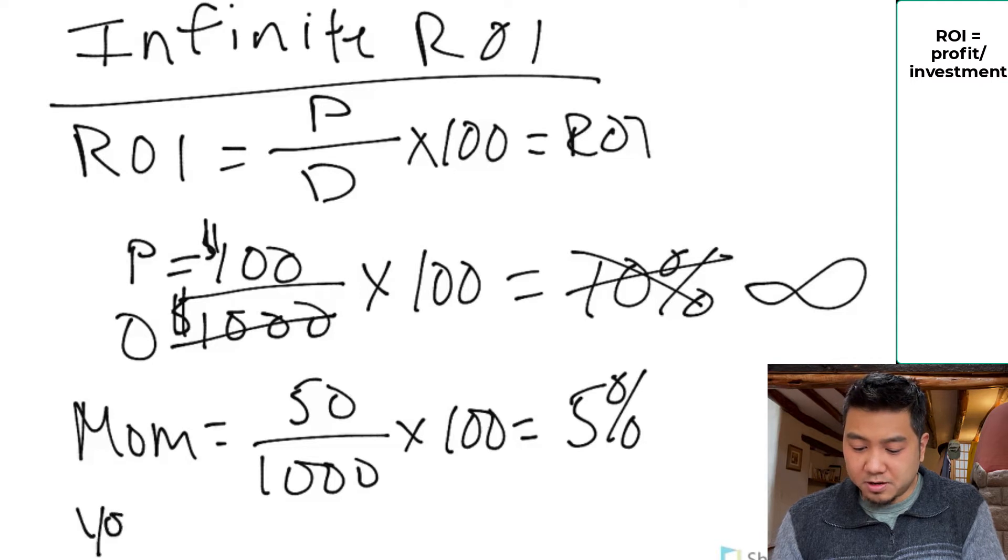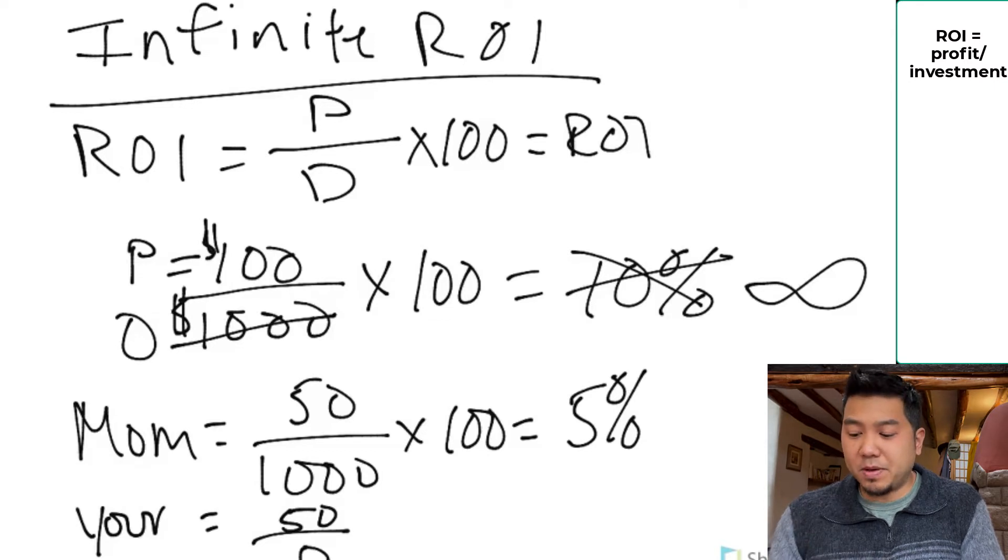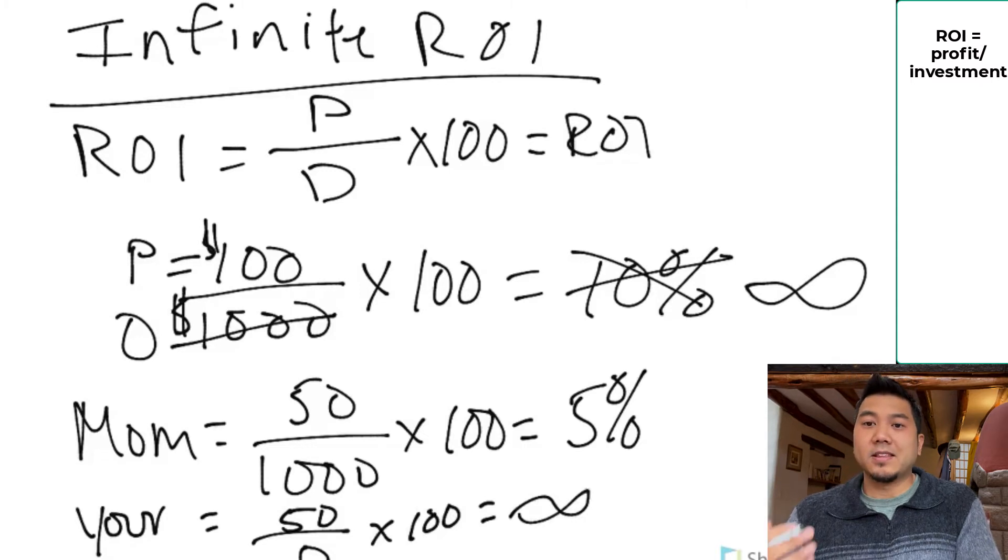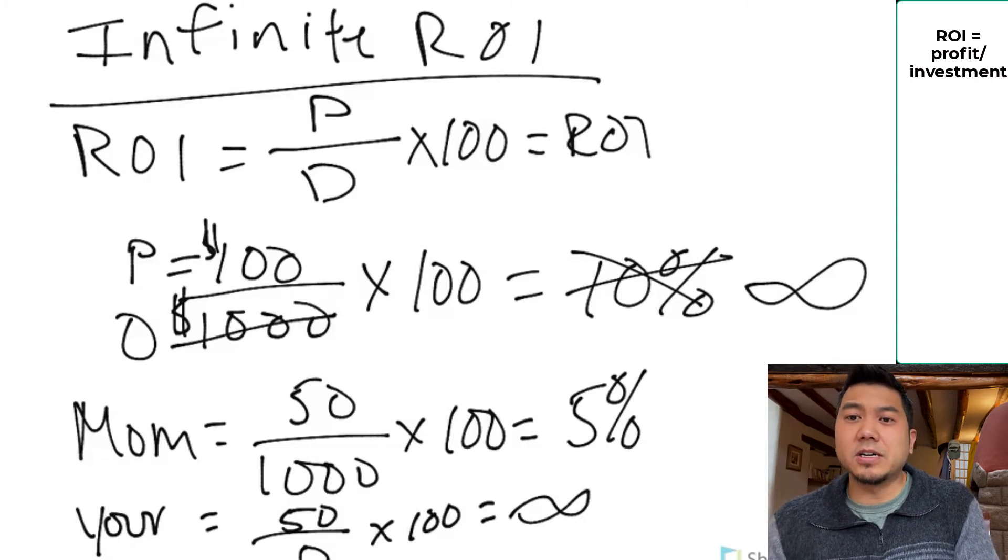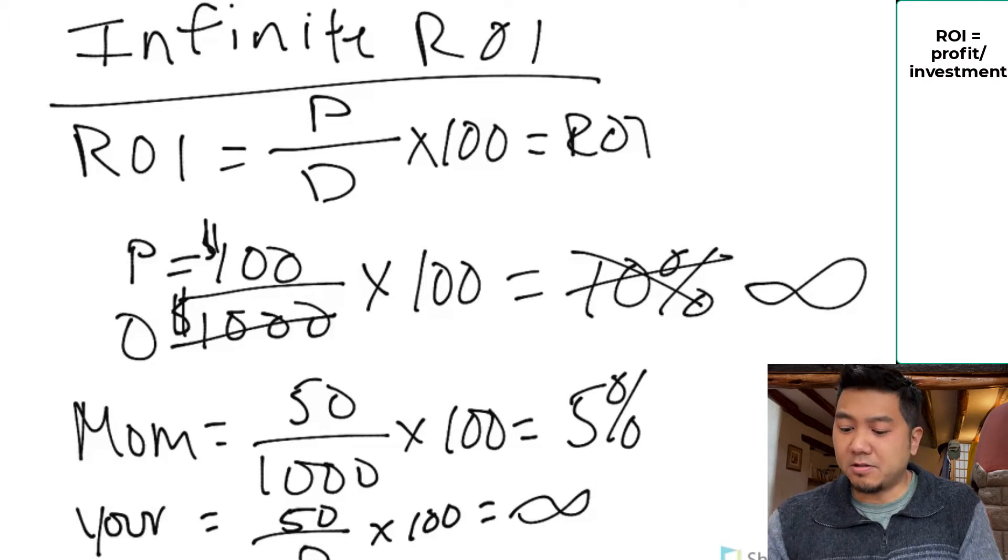Now your ROI, you also make $50. You put $0 down because your mom paid for it. You multiply that by $100. That's infinite. This is a very simple example of how we want to be as investors and what we want to achieve. Example number one, simple enough, we can all do it.